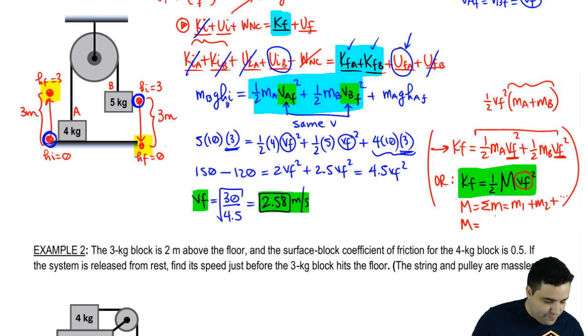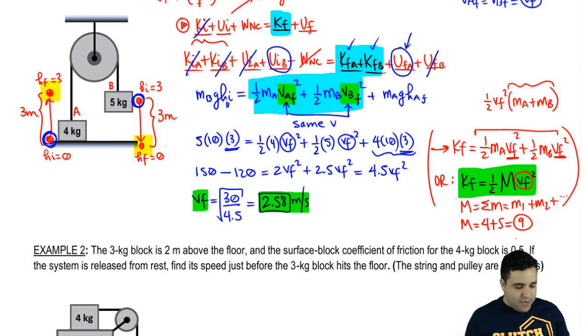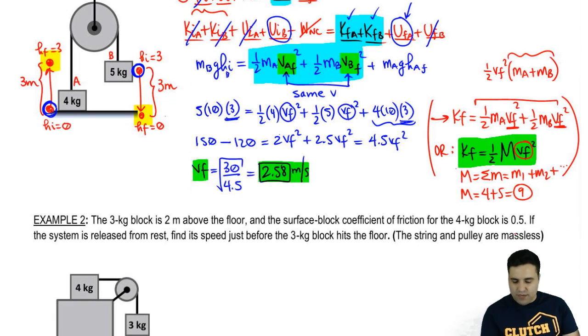So here in this case, big M would have been four plus five equals nine. So I have another example here.